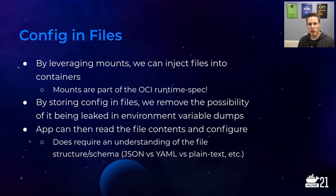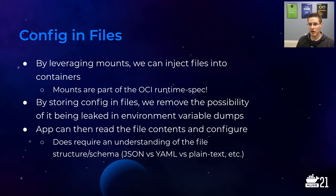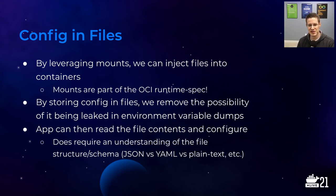The other option is to use files. This wasn't really a big thing with Heroku who wrote the 12 Factor App, but containers made it more accessible. By leveraging filesystem mounts — which are part of the OCI runtime spec — we can inject files into containers. We do a lot of file mounting to mount source code or persist data, but we can also use it to provide configuration. By storing config in files, we're no longer risking dumping them into environment variable dumps, and the app just picks up the file and configures itself from there.